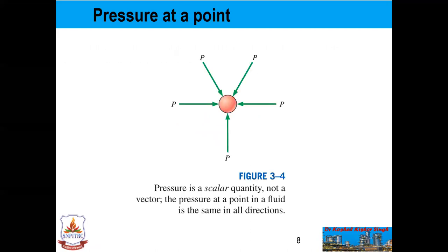Now we will see pressure at a point. Pressure is the compressive force per unit area and gives the impression of being a vector. However, pressure at any point in a fluid is the same in all directions — it has magnitude but not a specific direction, and thus it is a scalar quantity. This can be demonstrated by considering a small wedge-shaped fluid element of unit length. The pressure at a point in a fluid is the same in all directions.